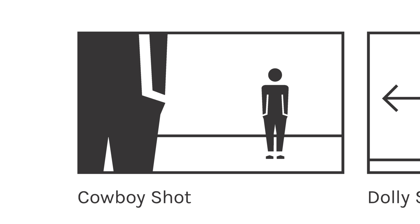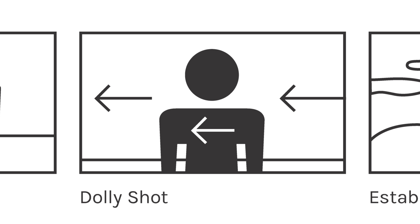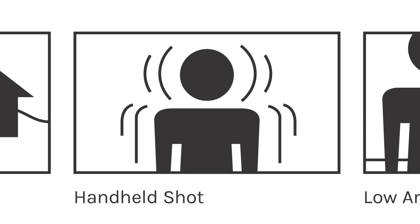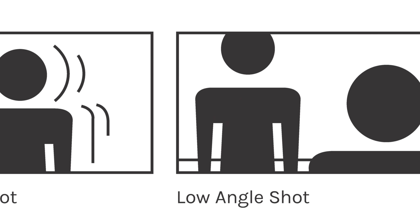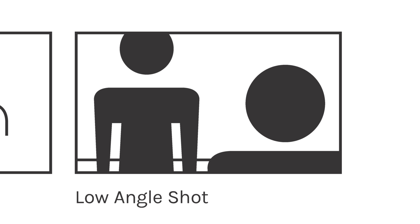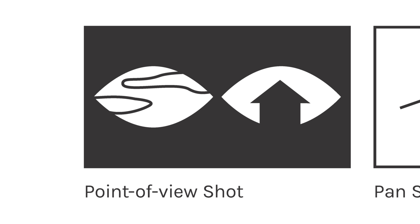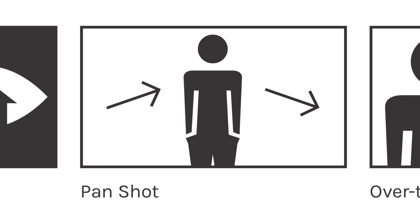The cowboy shot, which is similar to the long shot but it's shot from the hip. The dolly shot, which is a pan left to right or right to left. The establishing shot, which gives some context to your overall video by showing a landscape. A handheld shot, which is basically holding your camera and filming. A low angle shot, which gives the person in the background more dominance over the one in the foreground. And a point of view shot, which is seen from the character's perspective.